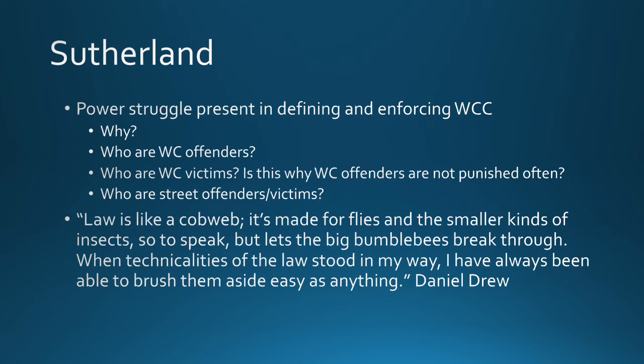Daniel Drew, a contemporary of Henry Flagler, John Rockefeller, John Jacob Astor, the Vanderbilts, and the Carnegies, from the robber baron age, is quoted as saying: 'Law is like a cobweb — it's made for flies and the smaller kinds of insects, so to speak, but lets the big bumblebees break through. When technicalities of the law stood in my way, I've always been able to brush them aside easy as anything.' Basically, the laws are there for the little guys; if the law ever gets in the way of the powerful, they just push it to the side and move on.